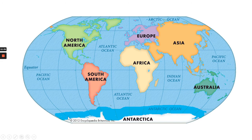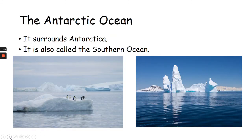And now we're looking at the bottom of the map, and we're looking at the Antarctic Ocean. The Antarctic Ocean is next to the continent of Antarctica. Some people call the Antarctic Ocean the Southern Ocean, but it's the same thing. The Antarctic Ocean surrounds Antarctica. It is also called the Southern Ocean. And look — this is where those fabulous penguins live. I bet you've seen them on the TV, jumping off blocks of ice and diving into the water to catch fish.